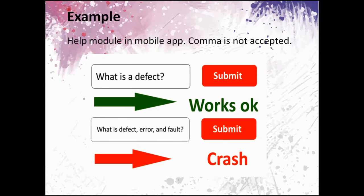Here is an example. Imagine a help module in a mobile app. There is a text field where a user can type a question and get an answer. A developer made an error and a comma is not accepted by the system. So, there is a defect in the system.